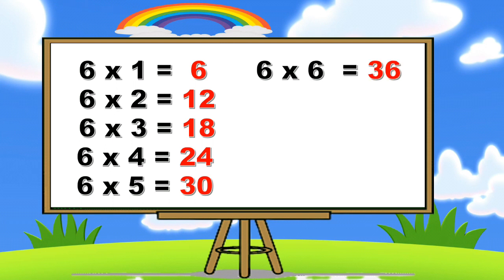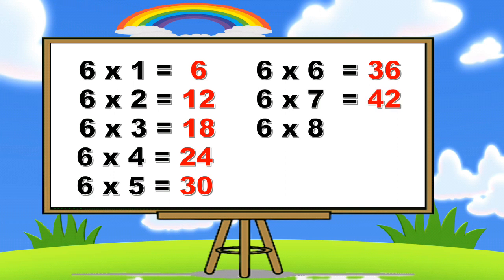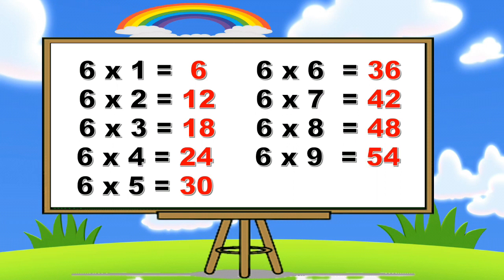Six sixes are thirty-six. Six sevens are forty-two. Six eights are forty-eight. Six nines are fifty-four. Six tens are sixty.